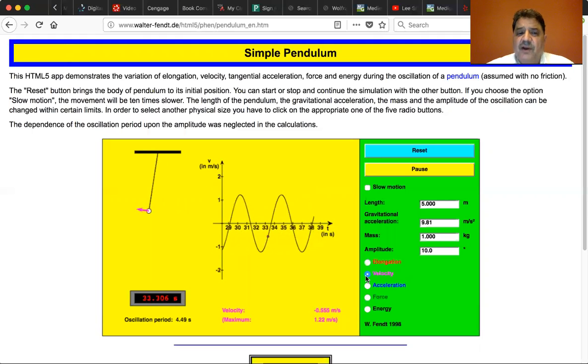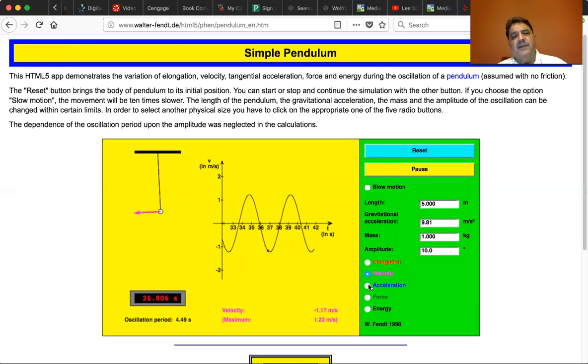What type of potential energy? Gravitational potential energy. Let's look at the acceleration. The acceleration is least when it goes through the zero crossing and is most when it is at either end because that's when it's changing directions.